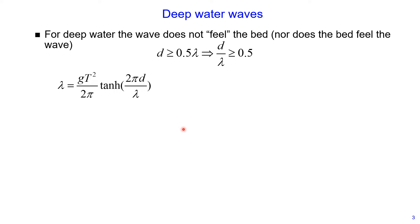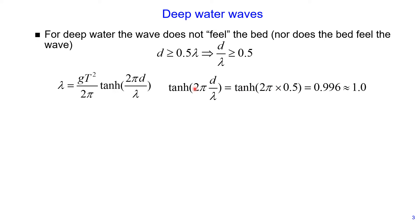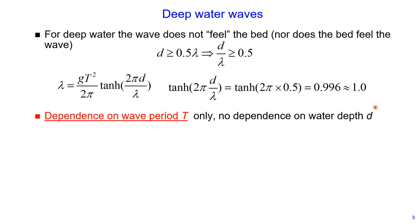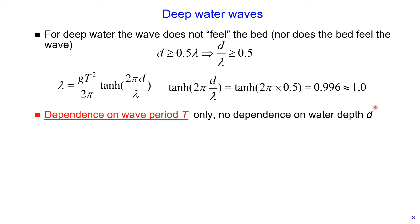For deep waters, the hyperbolic tangent is approximately equal to 1. If we substitute the ratio d divided by λ as 0.5 — because for deep water waves it should be greater than or equal to 0.5 — the hyperbolic tangent value is approximately 1. Therefore, for deep water waves the wavelength depends only on wave period, with no dependence on water depth.